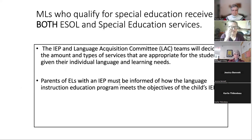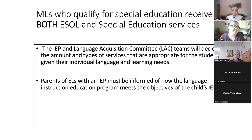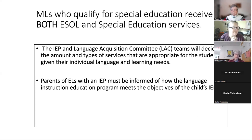It is entirely appropriate that if an MLL student has also been identified as a student with an exceptionality, they receive both special education services and ILAP services. The IEP team and the Language Acquisition Committee — the LAC — will work together to decide the amount and types of services appropriate for the student so they can access FAPE. The parents of multilingual learners with an IEP must be informed of how the language instruction education program meets the objectives of the child's IEP.